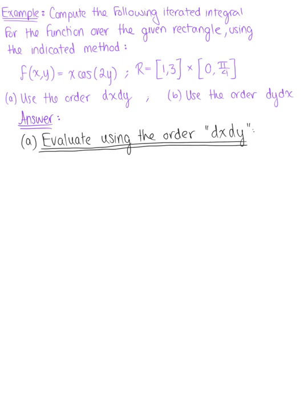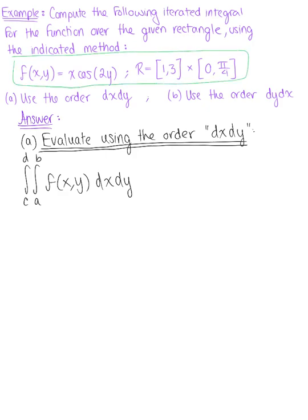Compute the following iterated integral for the function over the given rectangle using the indicated method. Part A is asking us to evaluate using the order dx dy. We will keep in mind that if we're using the order dx dy, we have the integral on the outside from c to d, and the inner integral from a to b of f(x,y) dx dy.